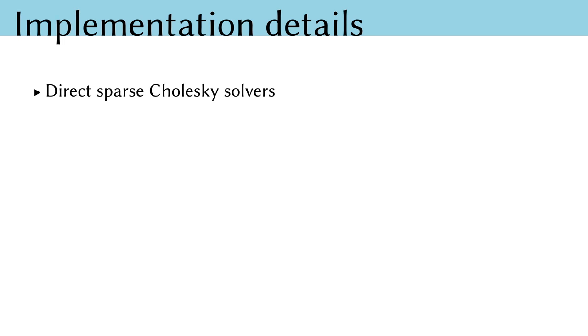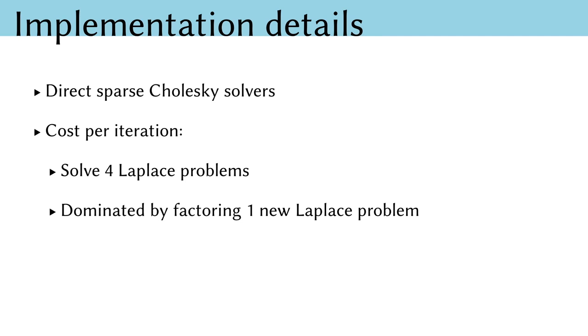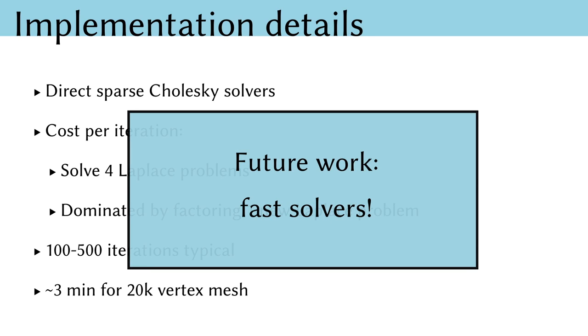A few more concrete details. We use sparse direct Cholesky solvers for all linear solves, and the cost per iteration turns out to be dominated by solving four Laplace problems. But in fact, only one of these Laplace problems is actually new. The others can be prefactored, and our cost is determined by factoring one new Laplace problem per iteration. We find a few hundred iterations to typically be sufficient, and putting this all together yields about three minutes of runtime on a 20k vertex mesh as a typical example. One important point here is that we intentionally use the simplest numerical scheme which effectively evaluates this new flow. There's surely a great deal of work that could be done in terms of fast solvers.